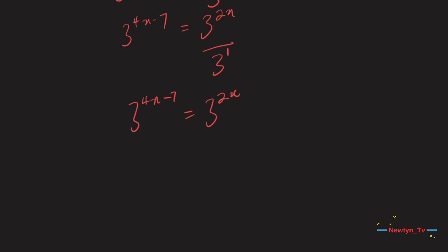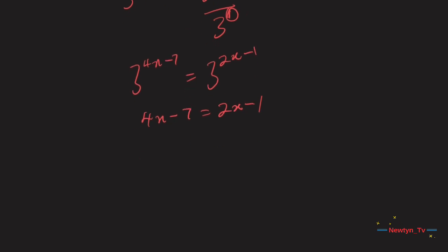Now we have the same base. So we apply the one-to-one property of exponents. When we apply that, we get 4x minus 7 should be equal to 2x minus 1. Now we group like terms, so we get 4x minus 2x should be equal to minus 1 plus 7.